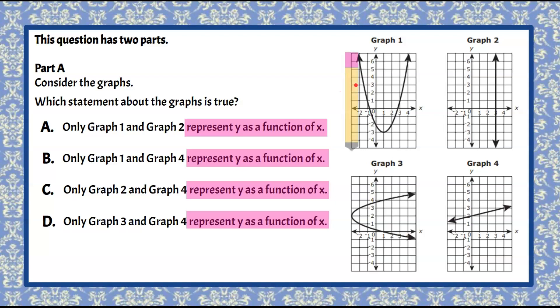You take your pencil and you put it on the graph and you pass it left to right. If it ever passes through more than one point on the graph at a time, it fails the vertical line test. If it only ever passes one point at a time, then it passes and the graph is a function.